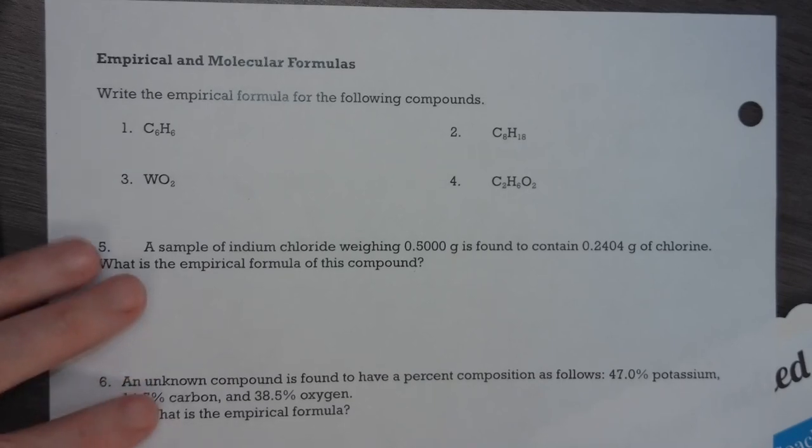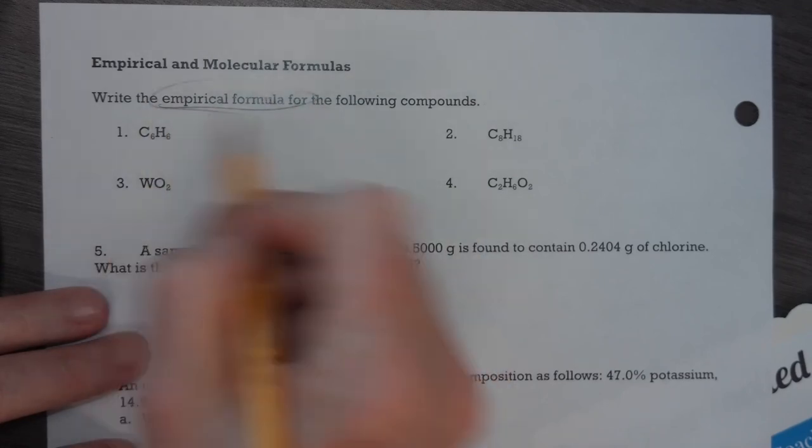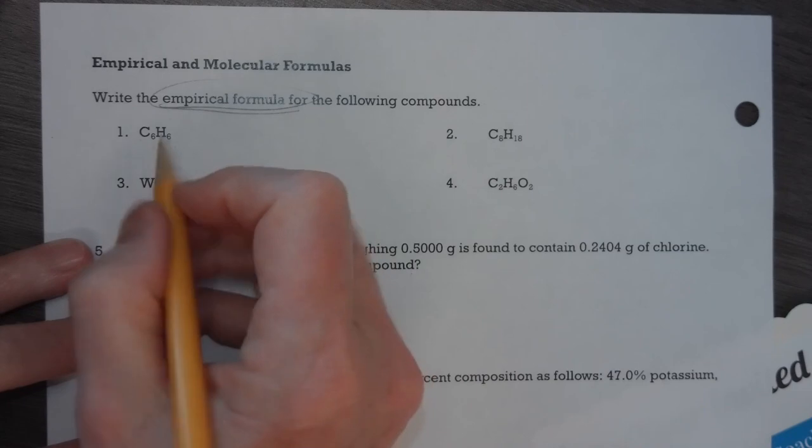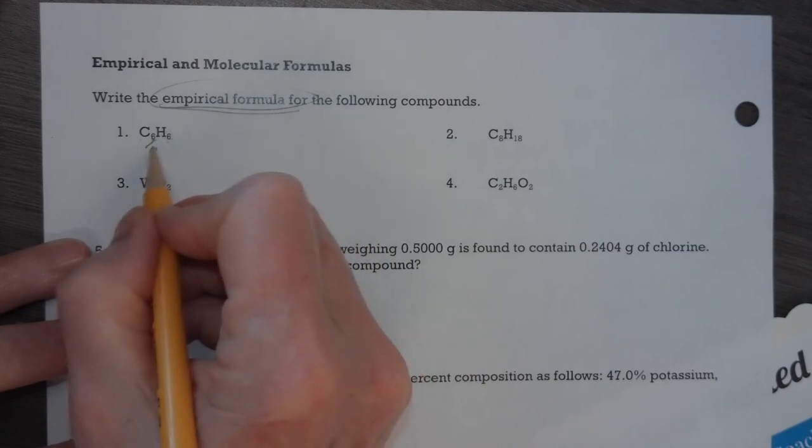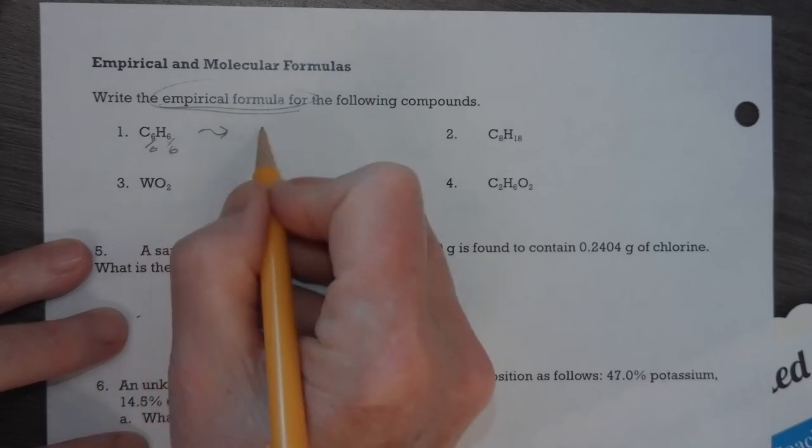All right, this is the back page of the additional practice to prepare us for the CFA Learning Target 6.2. Remember, the empirical formula is the lowest ratio. So if I have C6H6, that common denominator is 6. The lowest ratio is 1 to 1, so it's going to just be CH.